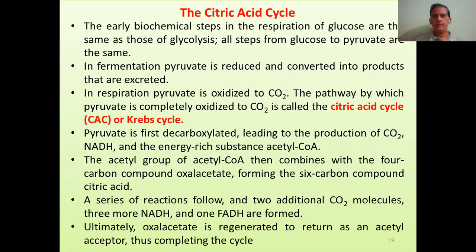In this cycle, pyruvate is first decarboxylated, leading to the production of carbon dioxide, NADH, and the energy-rich substance acetyl-CoA. The acetyl group of acetyl-CoA then combines with the 4-carbon compound oxaloacetate, forming the 6-carbon compound citric acid — which is the first compound of this cycle, hence it is also known as the citric acid cycle. After this, a series of reactions follows, leading to the release of 2 CO2 molecules, 3 more NADH, and 1 FADH2. Ultimately, oxaloacetate is regenerated, ready to accept another acetyl molecule.